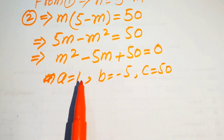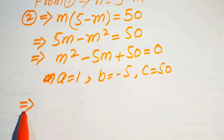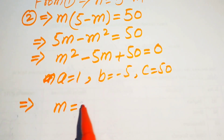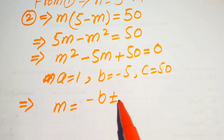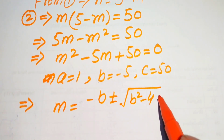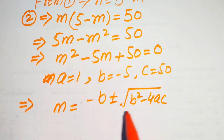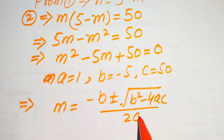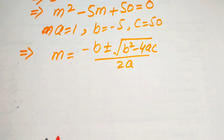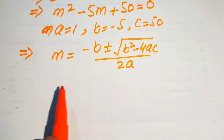The quadratic formula states m equals negative b plus or minus the square root of b squared minus 4 times a times c, all divided by 2a. Here a is 1 and c is 50.